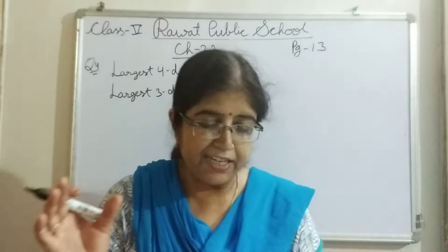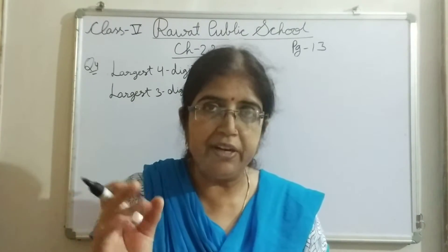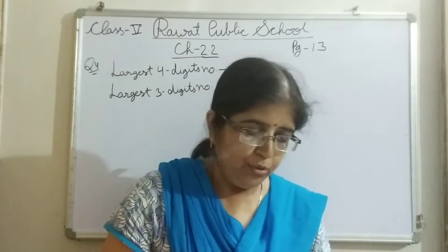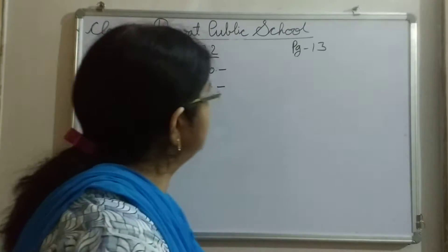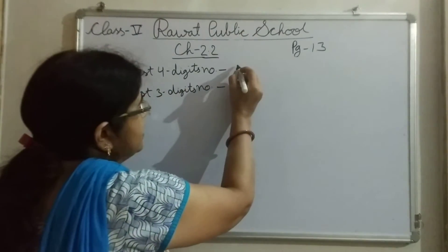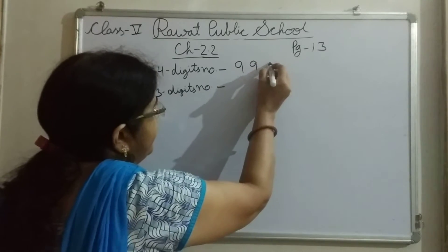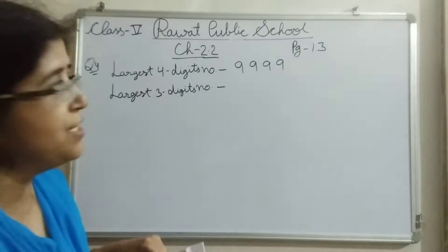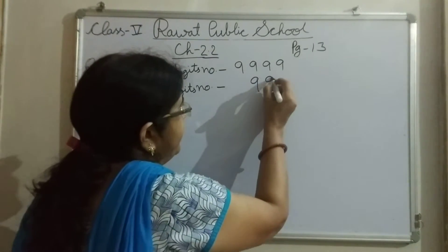क्या करना है आपको? Largest 4-digit number और 3-digit number का sum करना है, means add करना है. तो largest 4-digit number जानते ही क्या होता है? The largest 4-digit number is 9999. And the largest 3-digit number is 999.